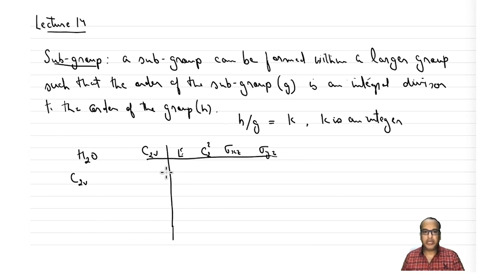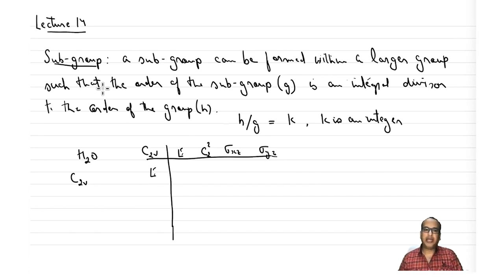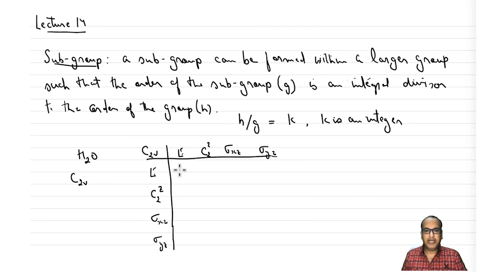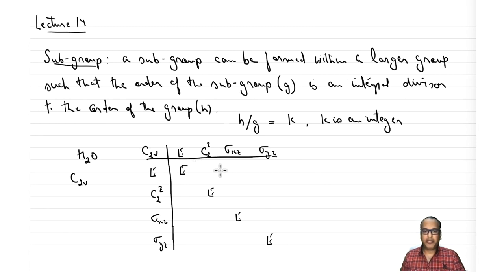We will see how within this group we can find a subgroup using the GMT. By definition, the subgroup should follow all four properties of a group: closure, associativity, identity, and inverse. So let us write the easy ones first. E into e will be e, C2z into C2z will be e, sigma xz into sigma xz will be e, and sigma yz into sigma yz will be e. The first row: e into anything will just be the same element.